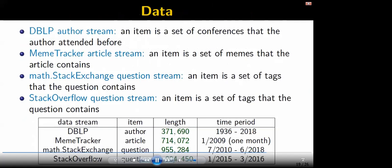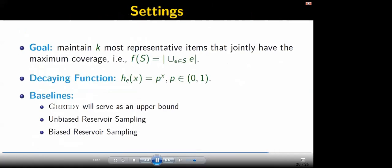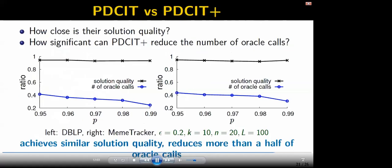We perform experiments on several real data streams. Our goal is to maintain the most representative items, and we choose the exponential decaying function. We consider three baselines: the greedy method and two sampling-based methods. In the first experiment, we compare PD-CIT with PD-CIT+, asking how close their solution quality is and how significantly PD-CIT+ can reduce the number of oracle calls. We found that PD-CIT+ achieves similar solution quality to PD-CIT but reduces oracle calls by more than half.